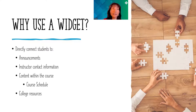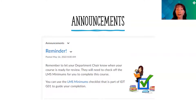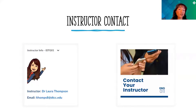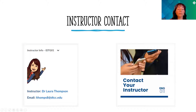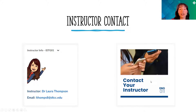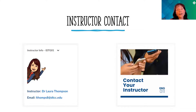Here's an example: a sample announcement widget and a sample instructor contact widget. In the one I created, it's personalized — I've got my bitmoji, my name, and my email. I've been able to provide links on the image and on the words, so students can email me directly from this widget. There's also a more generalized version from a dev shell that links to the instructor information page within the course. The value is that students can easily find your phone number, email, contact hours, and office hours right at their fingertips.